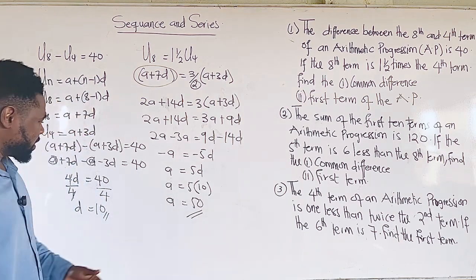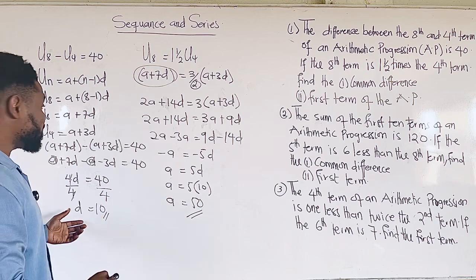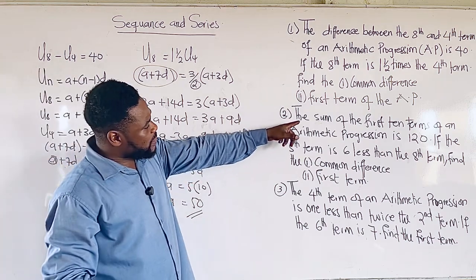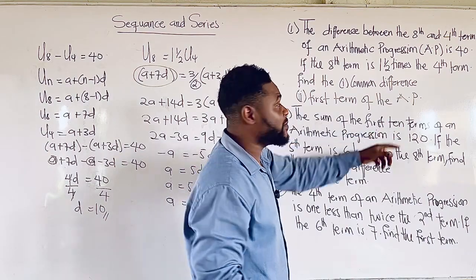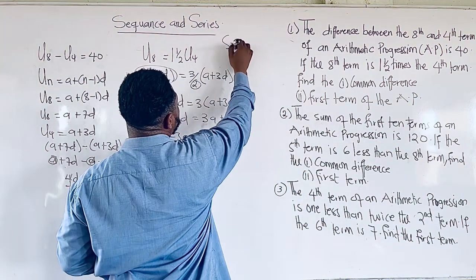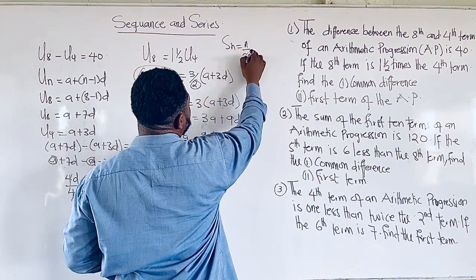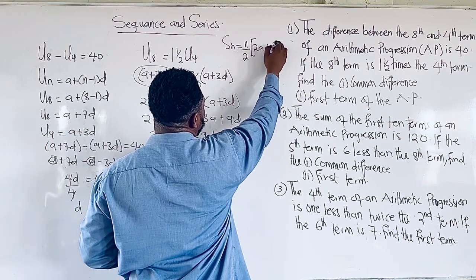So this is how we can get the first term and the common difference. Now, one thing about question number two is that we are going to use the sum formula to break the sum of the first 10 terms down. All students must know this formula in arithmetic progression.